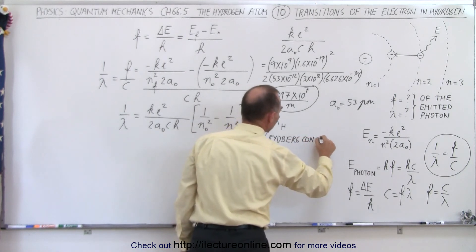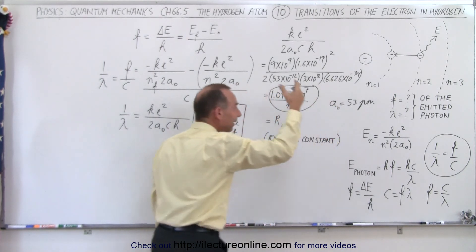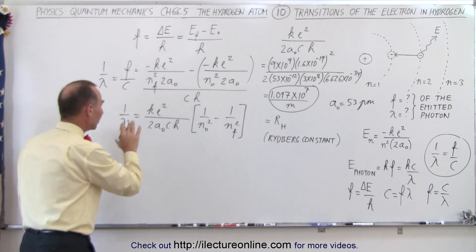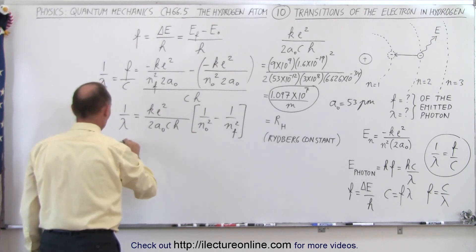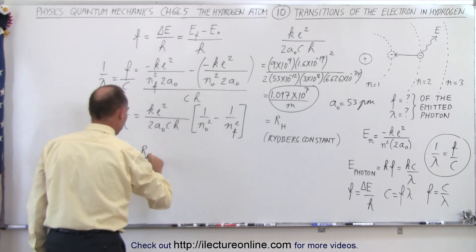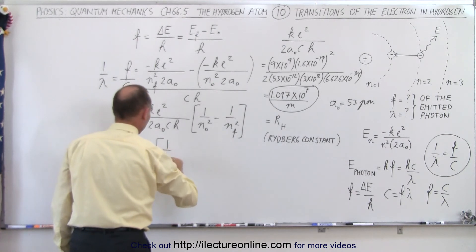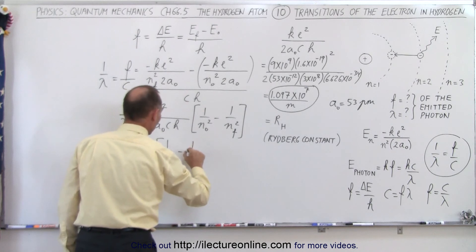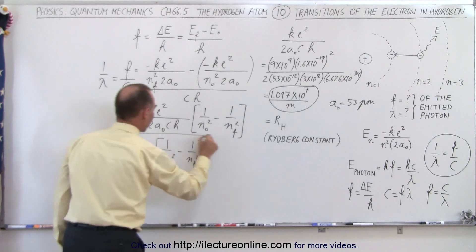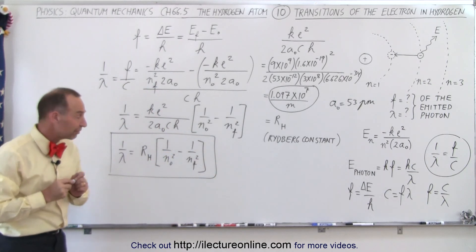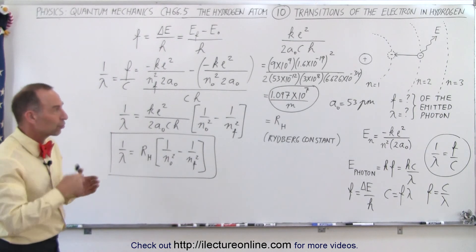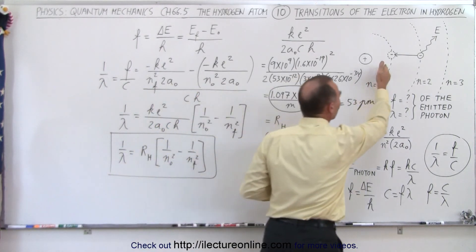The Rydberg constant is named after one of the scientists who worked on calculating the energies of these transitions. Rewriting the equation, we can say that 1 over lambda equals the Rydberg constant R sub H times the quantity 1 over n initial squared minus 1 over n final squared. This equation allows us to easily calculate the wavelength of the photons that would be emitted or absorbed through the transfer of an electron from one orbit to another.